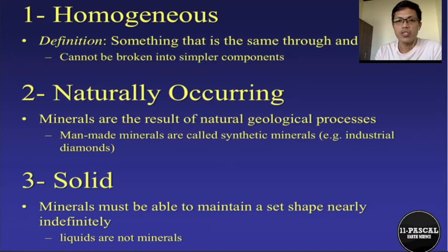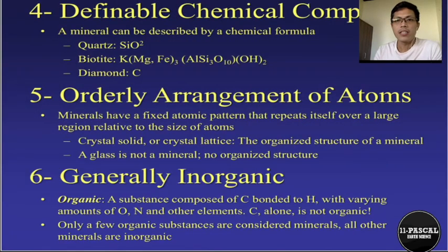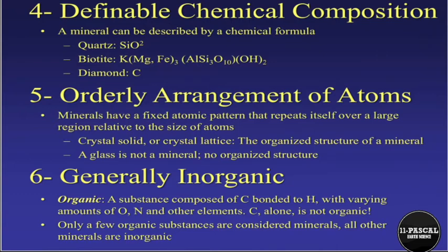Ice has the following characteristics: it is homogeneous, naturally occurring, and solid. The next characteristic is that a mineral must have a definite chemical composition — it can be described by a chemical formula. Examples are quartz (silicon oxide, SiO₂), biotite, and diamond (carbon, C). Although these may be compounds, the mineral itself cannot be broken into simpler components.